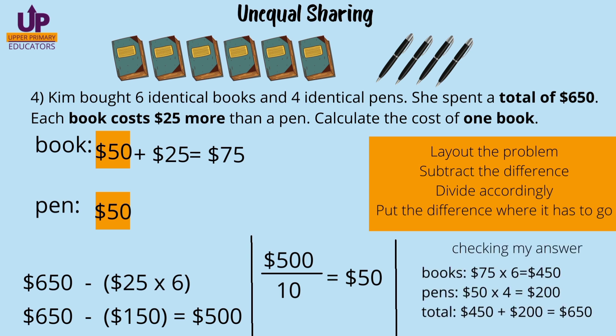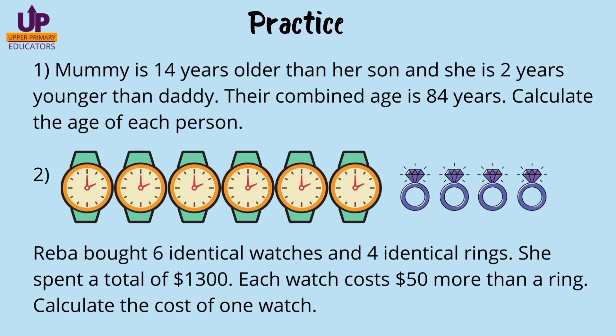Of course, we can check our answer. $75 for one book and we have six of them: $75 times 6 equals $450. A pen costs $50 and there are four of them: $50 times 4 equals $200. The total amount is the whole, $650, so we are certain our answer is correct. Here I've left two similar problems for you to practice with.